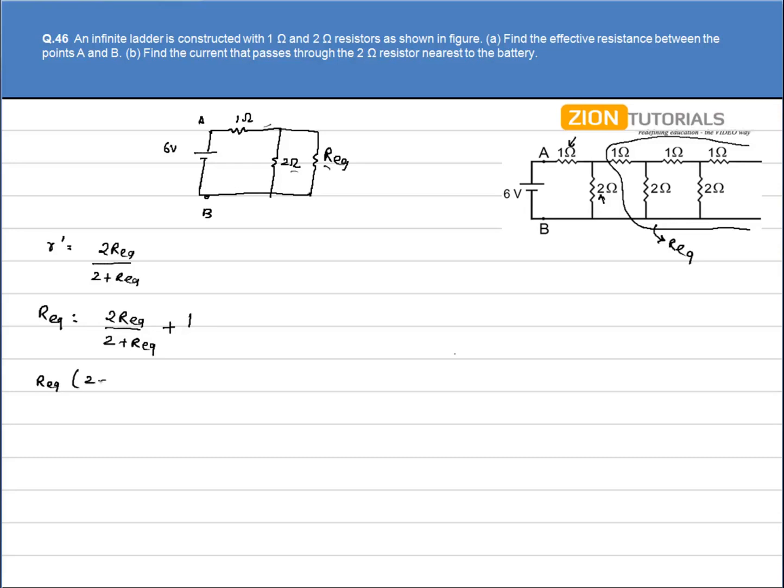We have R equivalent into 2 times R equivalent is equal to 2 R equivalent plus 2 plus R equivalent. So I have 2 times R equivalent plus R equivalent squared minus R equivalent minus 2. This is my quadratic equation.